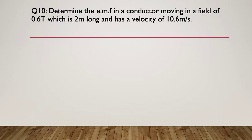Question ten. Determine the EMF in a conductor moving in a field of 0.6 teslas, which is 2 metres long and has a velocity of 10.6 metres per second. This time we want to know the EMF — not just a force like the previous two questions. Pause here.